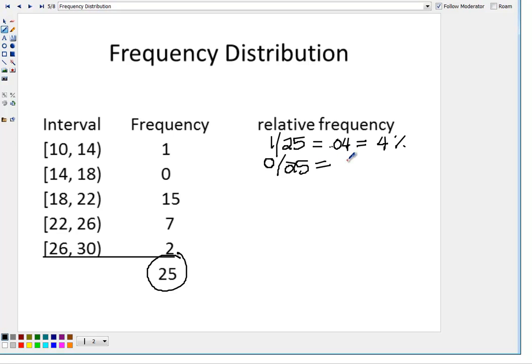Here for the second interval, we had 0, so it'll be 0 over 25, which is just 0, and we can just automatically say that's 0%. For the next interval, it'll be 15 out of 25. When we divide that out, I get 0.6, and to change that into a percentage, you move it two decimal places to the right. It'll be 60%.